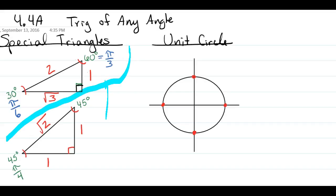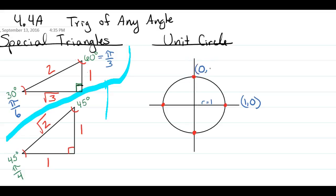We also need to memorize our unit circle. This is a simplified version of the ones we've worked with so far. The unit circle assumes the radius is 1 unit. If the radius is 1, the coordinates of the rightmost point are (1, 0), the top is (0, 1), the leftmost point is (-1, 0), and the bottom is (0, -1).